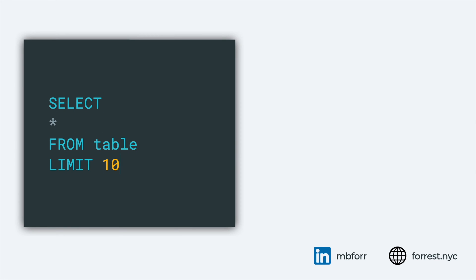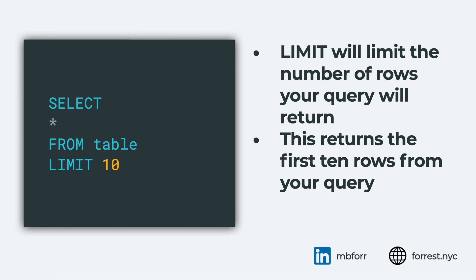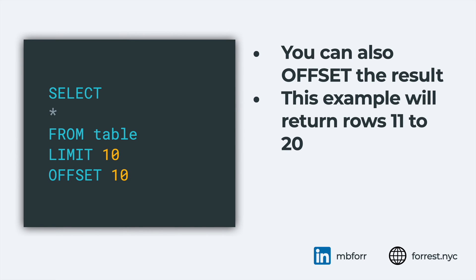LIMIT and OFFSET: a LIMIT tells the query that you only want to grab a certain number of rows from a table. In this case, we're selecting star from table and limiting by 10 — that will return basically the first 10 rows in the order they currently live in that table. OFFSET does the same thing but offsets it. So if you LIMIT 10 and OFFSET by 10, you return 10 total rows but starting from row 11 to 20. There is also an order in which these operations take place, and I have a full post linked below that walks through these components in more depth.